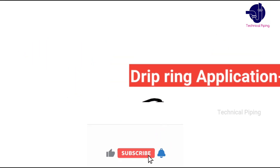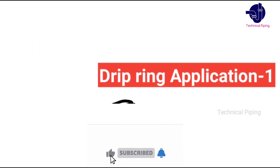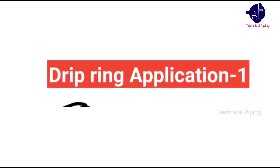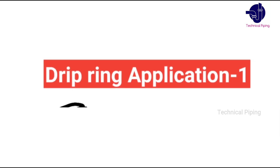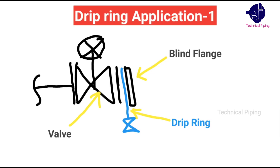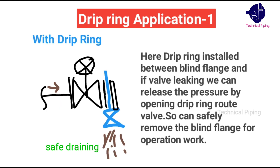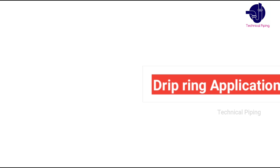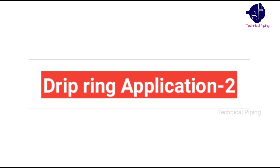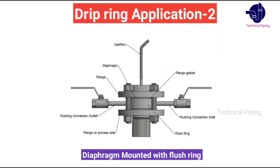Let's discuss some applications of the bleed ring. When a bleed ring is used between the valves and a blind flange, it allows you to relieve the pressure if your valve is leaking before you remove the flange.